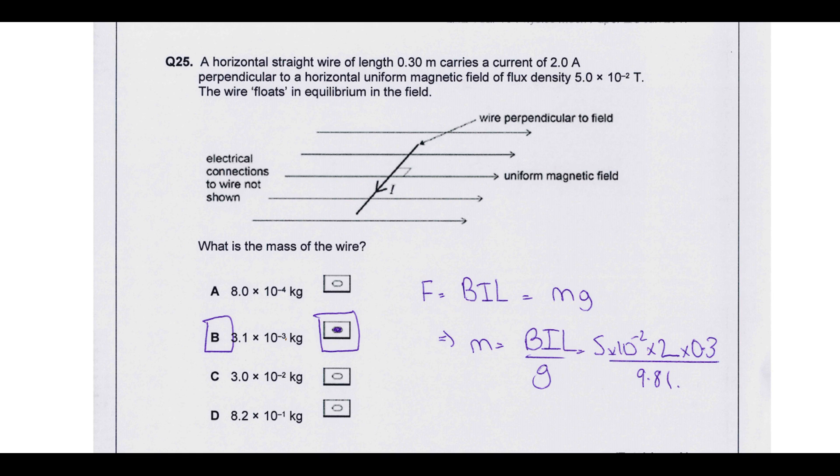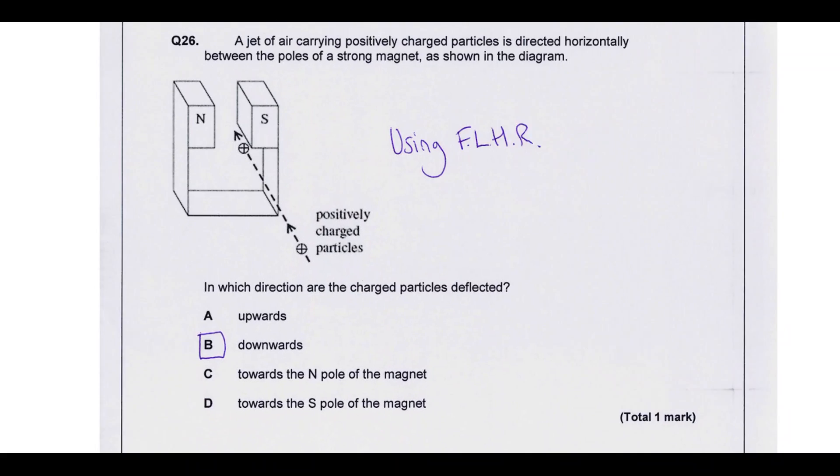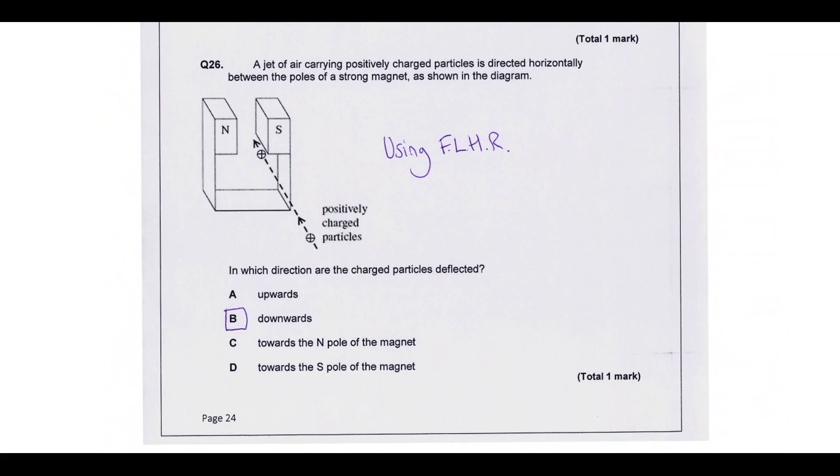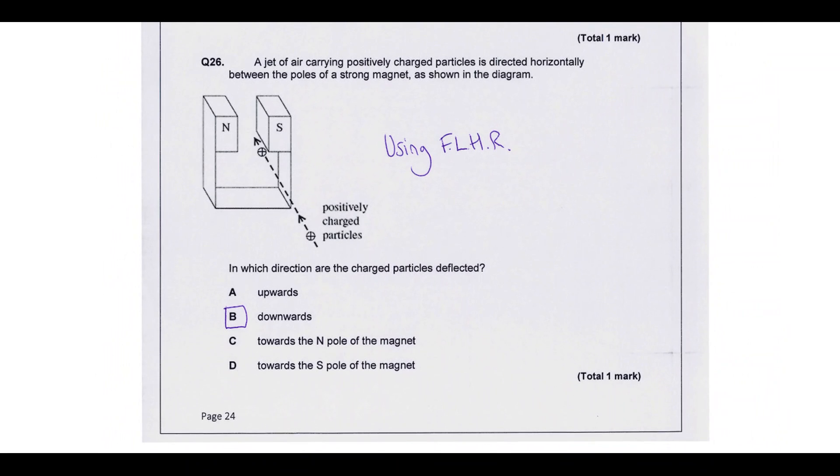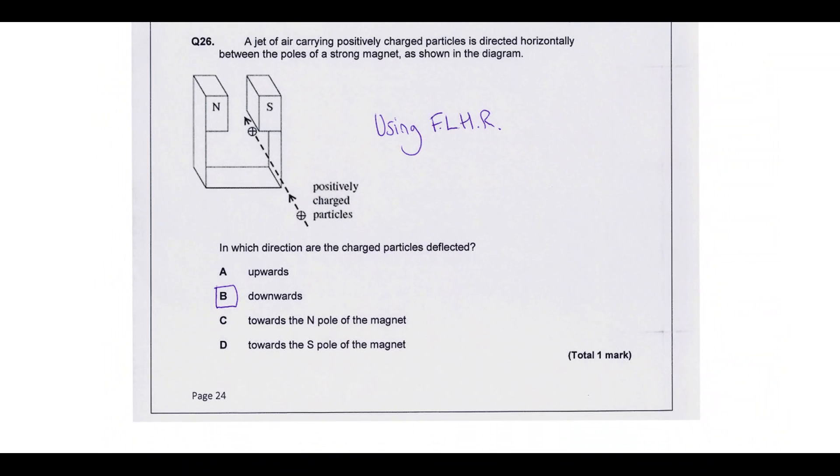The horizontal straight wire of length 0.3 meters carries a current of 2 amps perpendicular to a horizontal uniform magnetic field. The flux density 5.0 times 10 to the minus 2 Tesla. The wire floats in equilibrium in the field. That's going to mean the magnetic field force upwards would be equal to the weight force downwards. So that's what you can see happening over here. We're equating the force from the magnetic field and the weight force there. And then what we want to do is calculate the mass. So rearrange to make that the subject. Plug in some values and there comes your answer B.